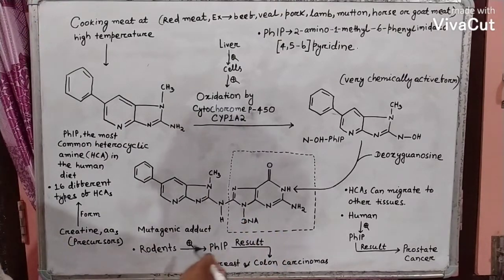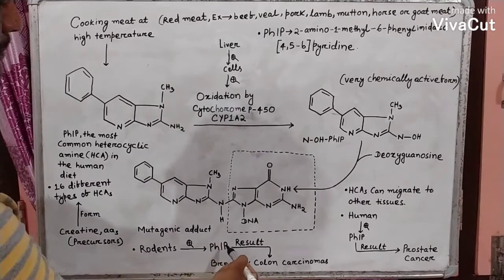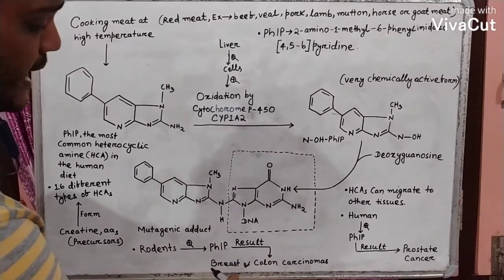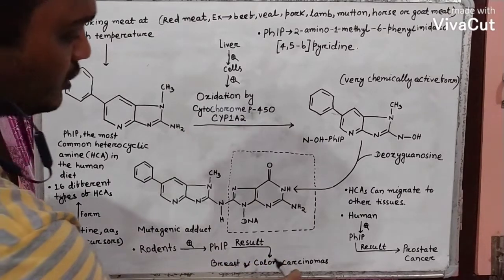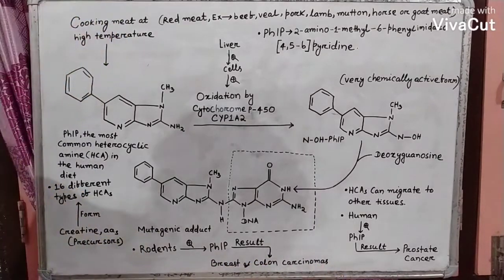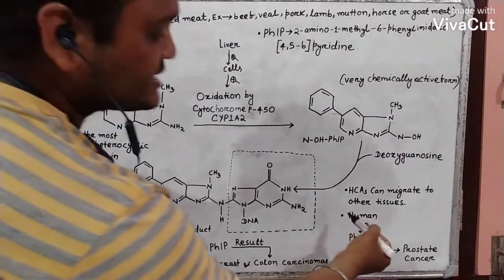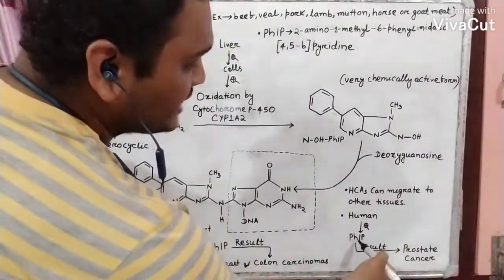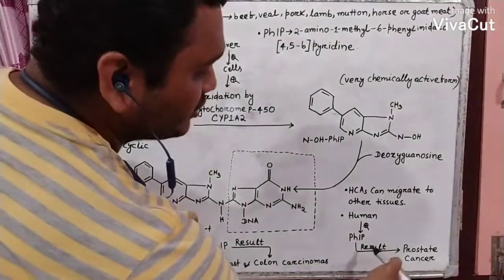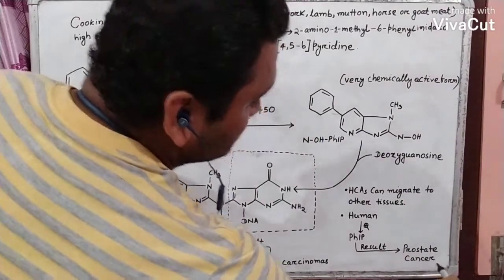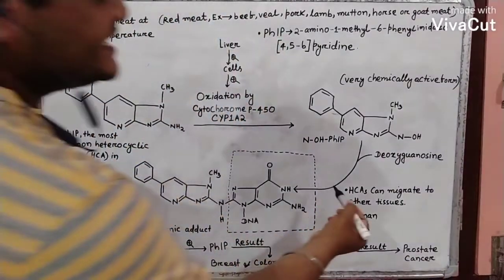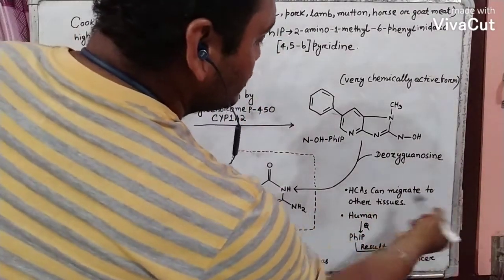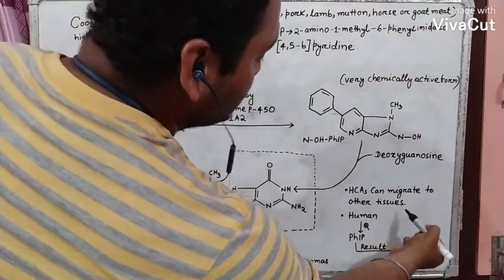In rodents, PHIP can cause breast and colon carcinomas. But in the case of humans, PHIP can cause prostate cancer. HCAs can also migrate to other tissues.